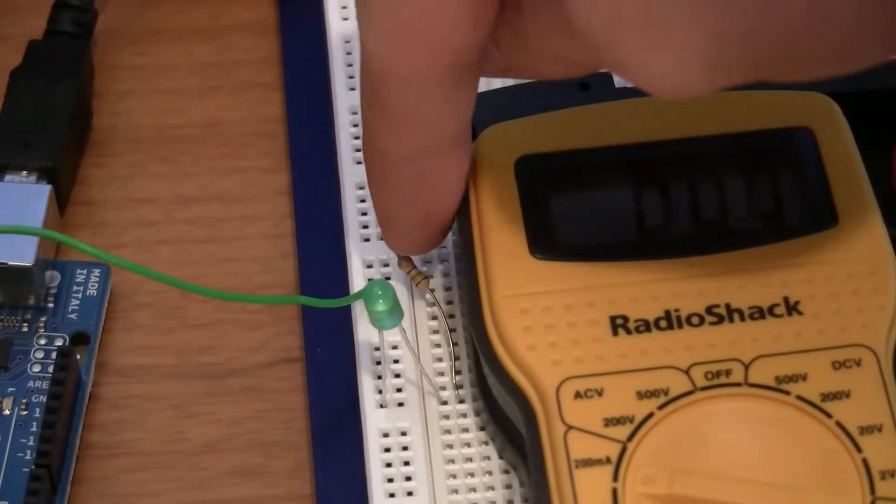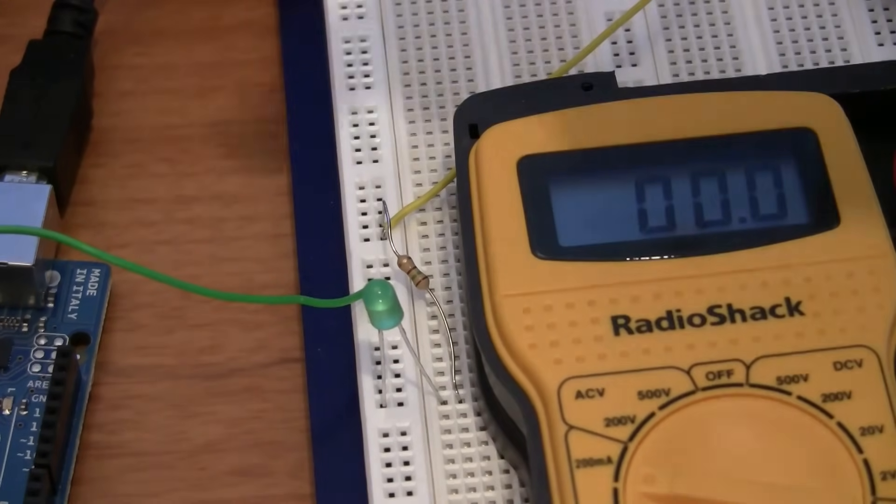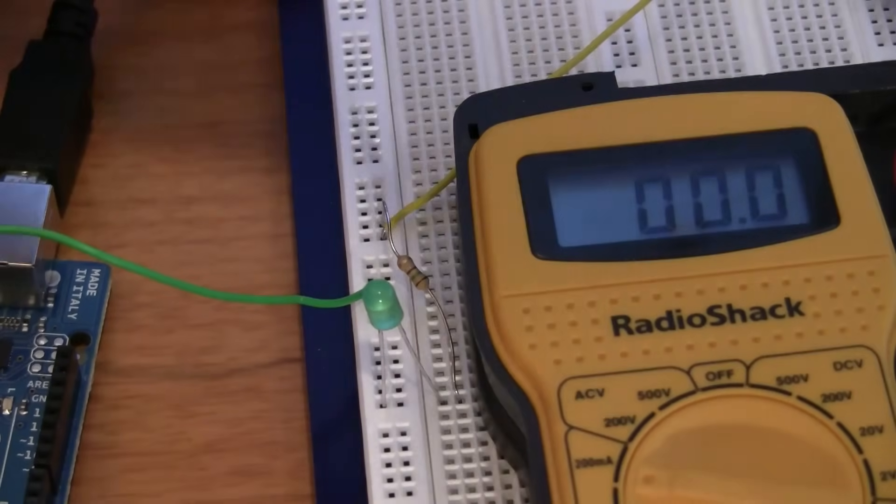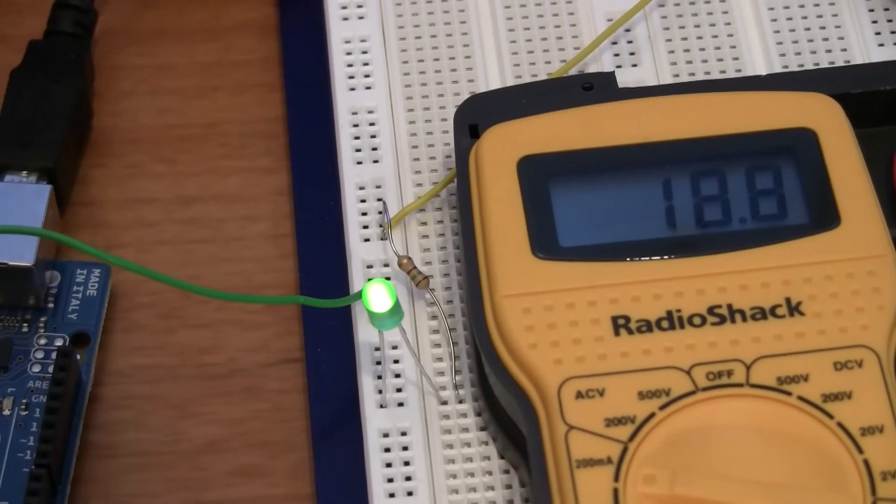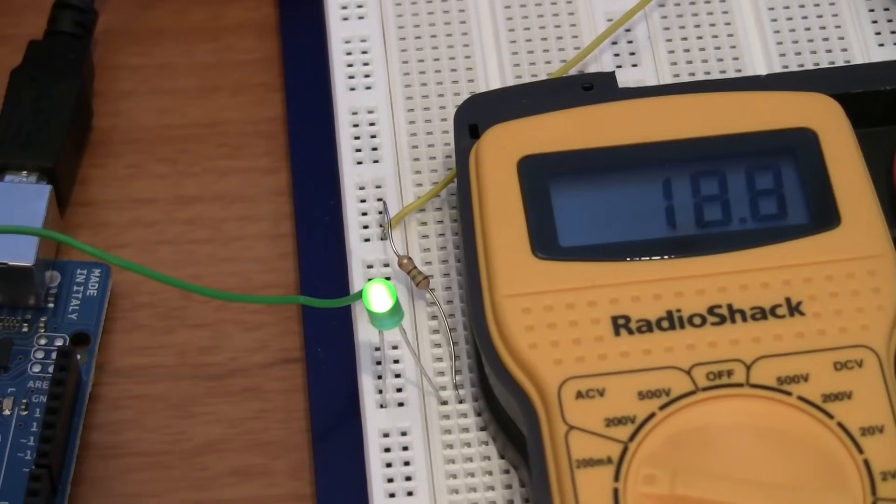Now I have our 150 ohm resistor, as we calculated in Ohm's Law before, hooked up with the LED in the Arduino. Let's see what happens. LED turns on. This time it's actually glowing green like it should. And we're at just about 20 milliamps. Perfect! Ohm's Law predicted it just as we expected it to.